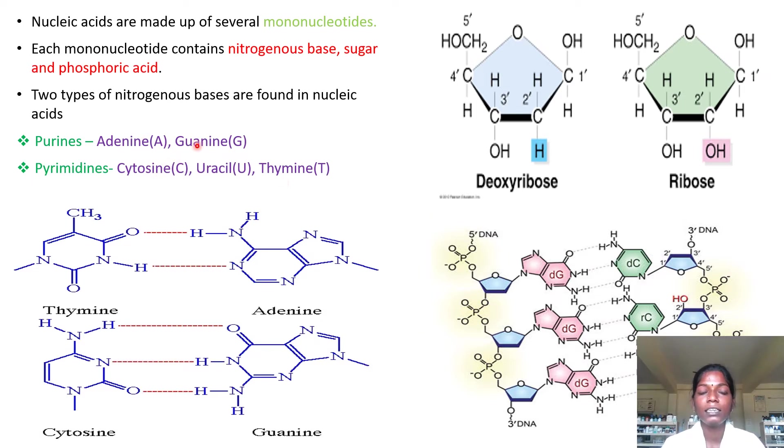In RNA, it contains adenine, guanine, and cytosine. Instead of thymine, it contains uracil.